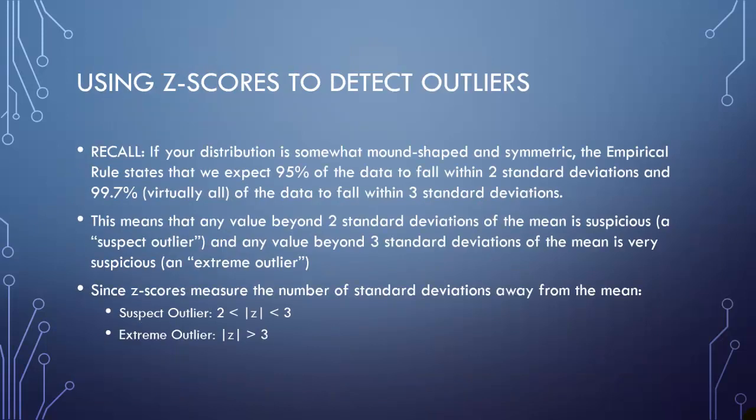We can also use Z-scores to detect outliers. Recall, if your distribution is somewhat mound-shaped and symmetrical, you can use the empirical rule, and it states 95% of the data would fall within two standard deviations, and virtually all the data would fall within three. This means that any data value beyond two is considered suspicious, or would be called a suspect outlier. Any value beyond three standard deviations, or having a Z-score more than three in absolute value, is very suspicious. We can call that an extreme outlier.